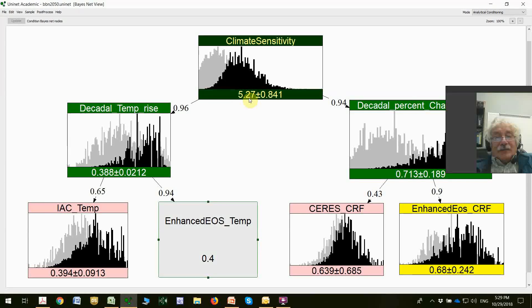Hallelujah. The two teams have come back with exactly the same prediction. 5.27 from the decadal rate of temperature change guys and 5.27 from the cloud radiative forcing guys. So now these two teams get together and they say, well, we got the same value. So let's combine our measurements. And that will reduce our uncertainty from 0.841 to something lower.